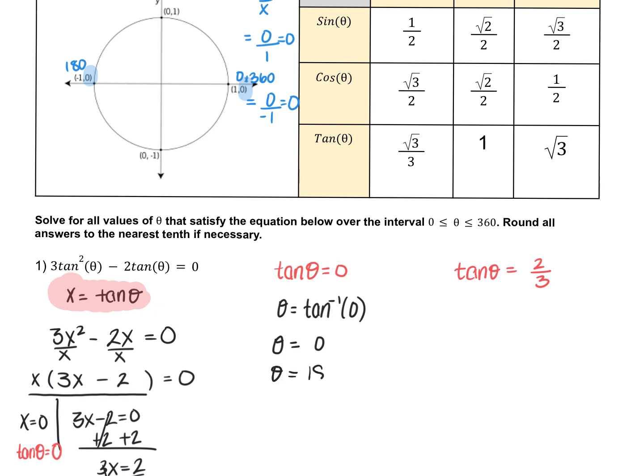So 0, 180, and 360. The downfall of using the calculator is that the calculator is not able to give us more than one answer at a time. So that's why it's important to make sure we know this unit circle.